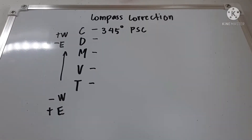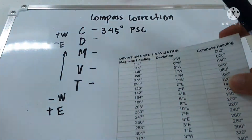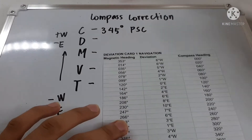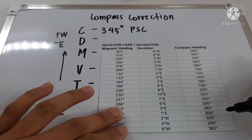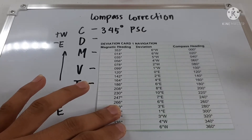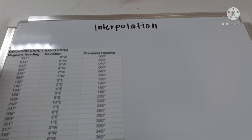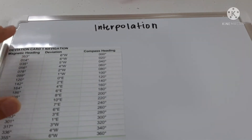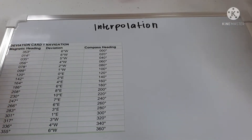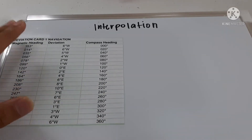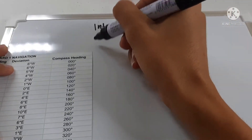We look up the deviation table for a course of 345 degrees PSC. Since 345 degrees falls in between two table values — 340 degrees and 360 degrees — we need to perform an interpolation to find the deviation.